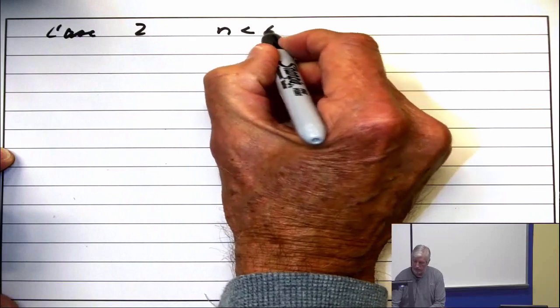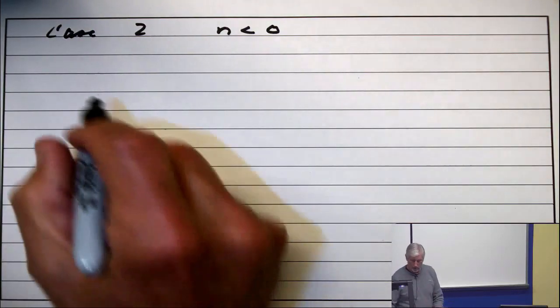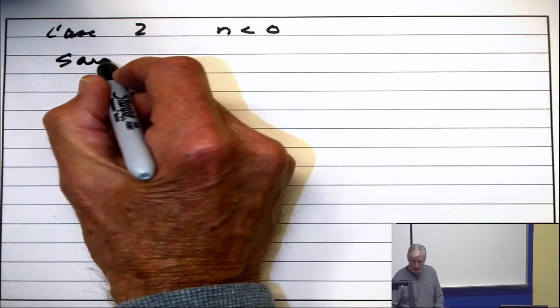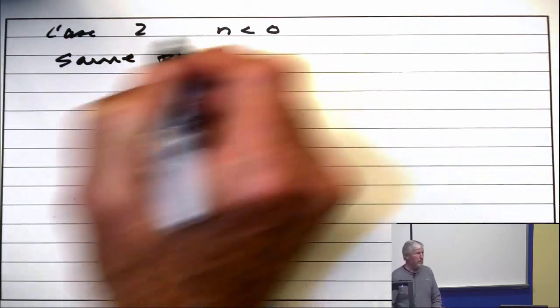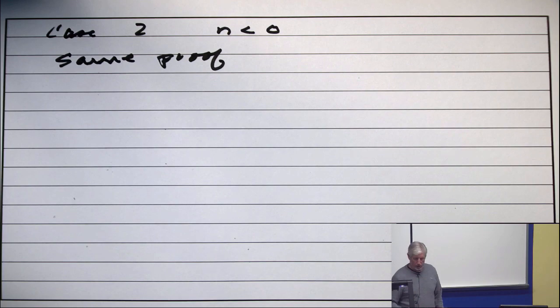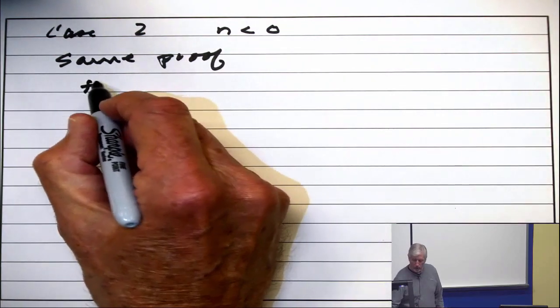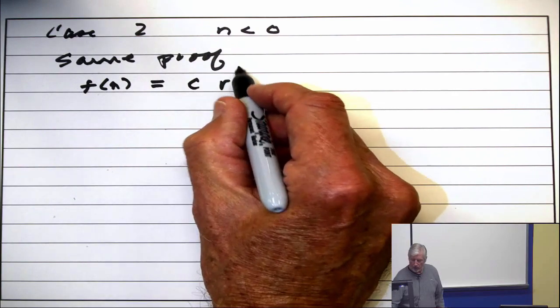n is negative. Now you just repeat the induction. Same proof. When n is negative, -n behaves like a positive integer, so the same argument works. Every solution has the form of some constant times r^n.